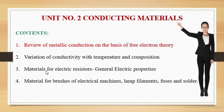Hello and welcome. This is the second part of Unit 2 on conducting material. In the first part we discussed the review of metallic conduction on the basis of free electron theory. In this lecture we are going to see variation of conductivity with temperature and composition, material for electric resistors, general electric properties, material for brushes of electrical machines, lamp filaments, fuses, and solder.